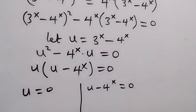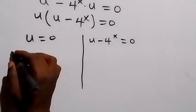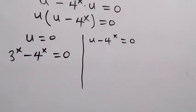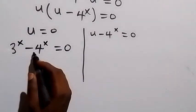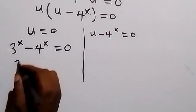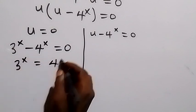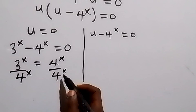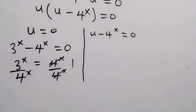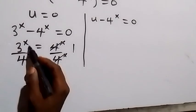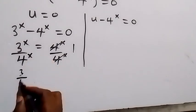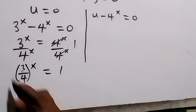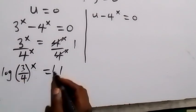From u minus 4^x equals 0, we get 3^x equals 4^x (since u = 3^x minus 4^x gives 3^x minus 4^x equals 4^x, meaning 3^x = 4^x... actually from this case: 3^x = 4^x). Dividing both sides by 4^x gives (3/4)^x equals 1.